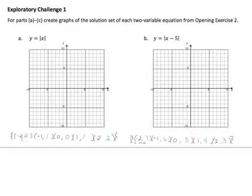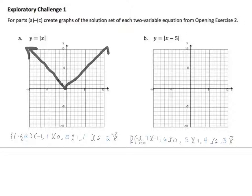Let's go ahead and graph negative 2, 2; negative 1, 1; 0, 0. Those aren't the best, but you can see the pattern I'm trying to go for. Absolute value has a slope of 1 and negative 1, so it looks like a V-shape.